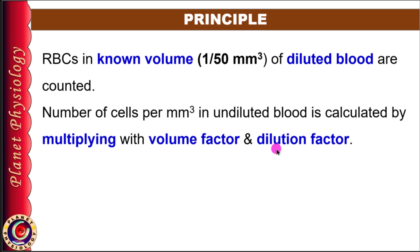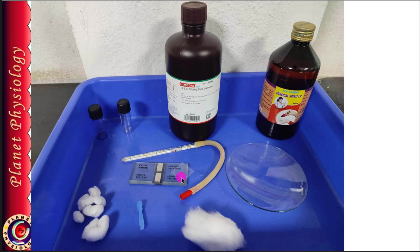To perform RBC count, you will need Hemocytometer, which includes the Neubauer chamber, a coverslip, and an RBC pipette. You will also require RBC diluting fluid, a watch glass, lancet, cotton, spirit,